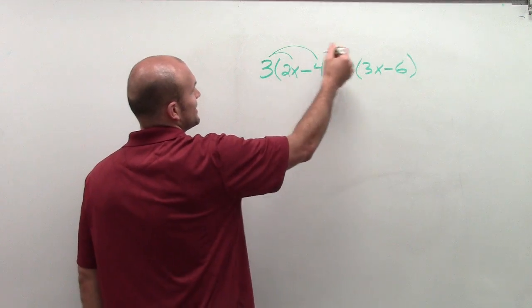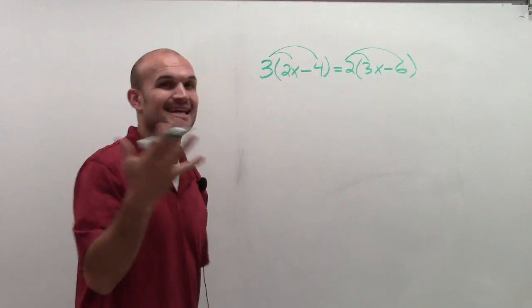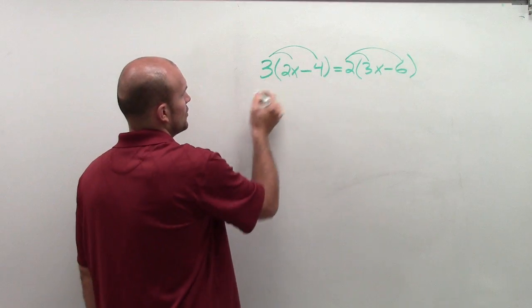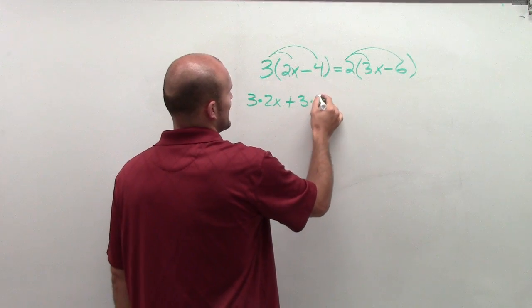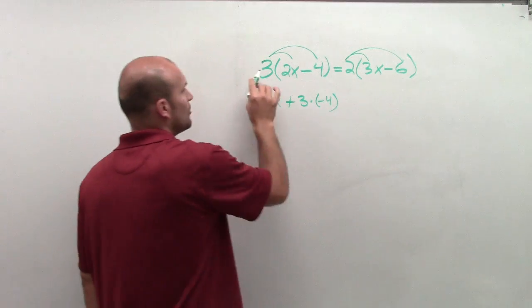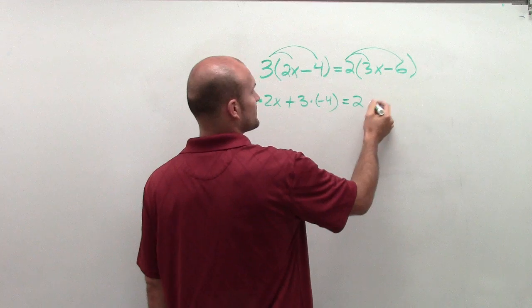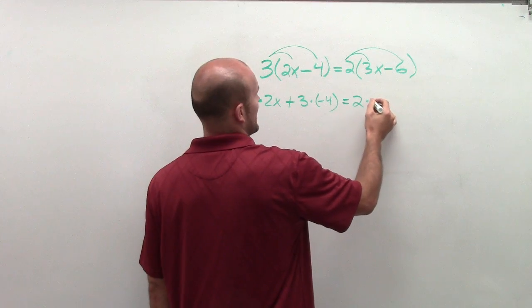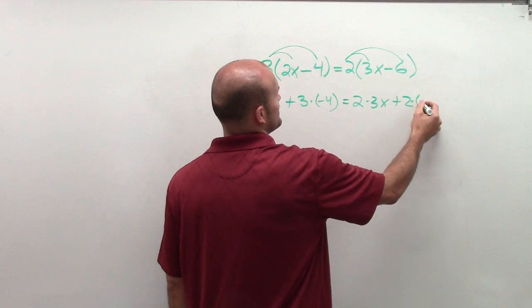So I'm going to multiply this 3 times both terms, and I'm going to multiply the 2 by both terms inside the parentheses. So what I'll have is 3 times 2x plus 3 times negative 4. And I wrote a plus 3 because that's a positive 3. Equals 2 times 3x and plus 2 times negative 6.